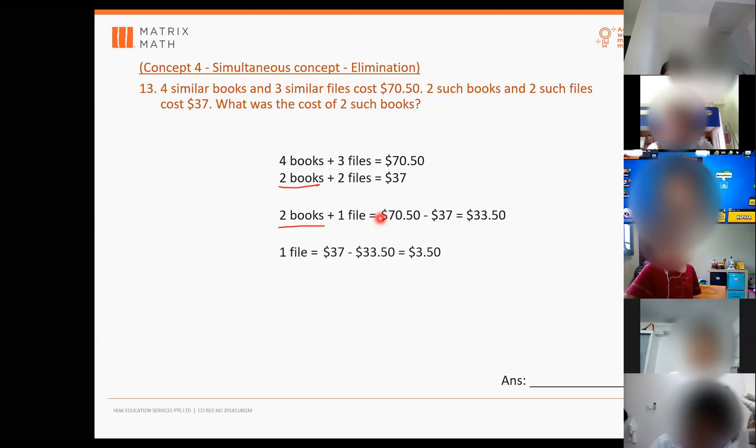So one file will be $37 minus away the $33.50. Tyro, what are you doing? $3.50. $3.50. So this is only one file, correct? Now, you read back the question. They want the cost of? Oh, two books. They want two books. They can minus. Minus. So what? Minus what? $33.50 minus $3.50, which is $30. Good. So those who... Sorry, it's $30. So those who are not sure what Aaron is saying, right? Okay, it's because once you found one file is $3.50, you can actually write it back here. Can you put a bracket $3.50 above the one file? I think I mentioned this many times before, right? Yeah, Pyro, you have a question?